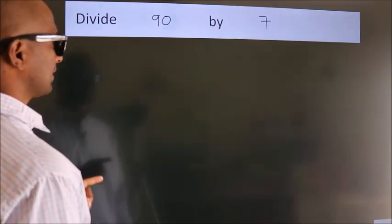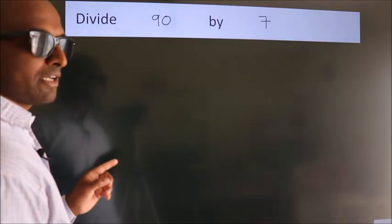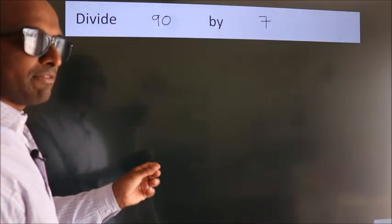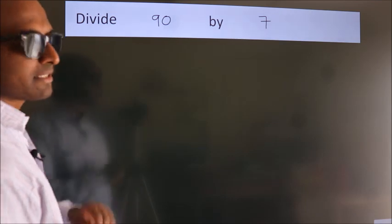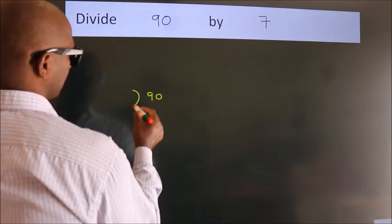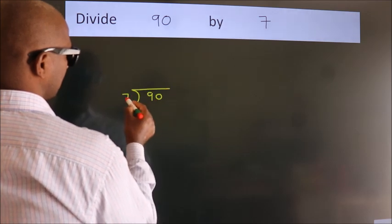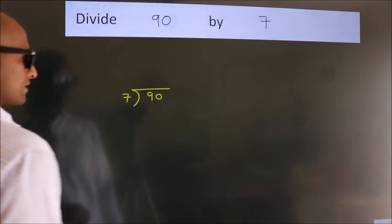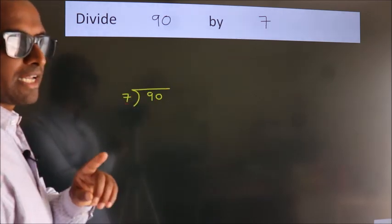Divide 90 by 7. To do this division, we should frame it in this way. 90 here, 7 here. This is your step 1.